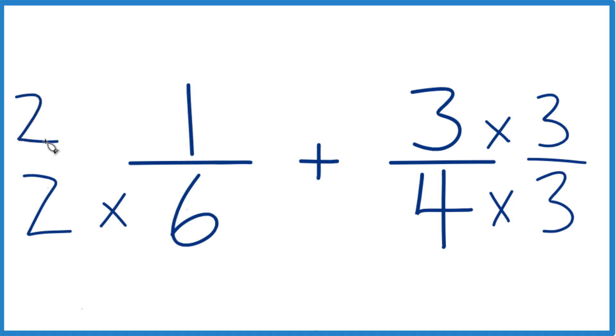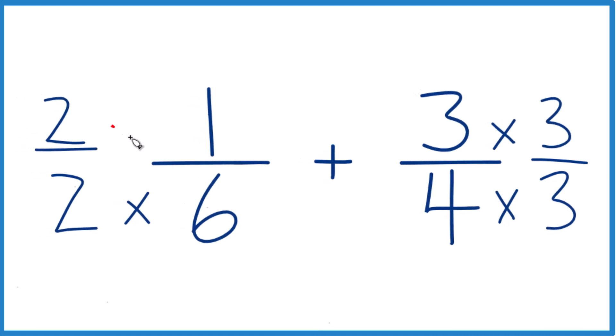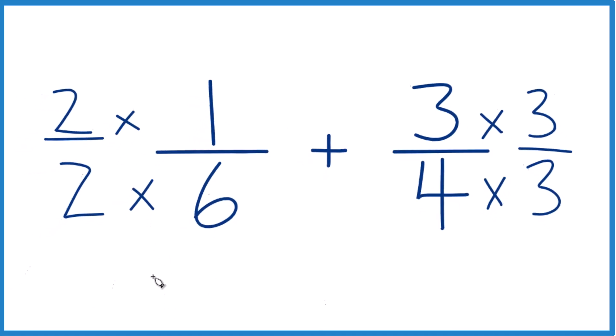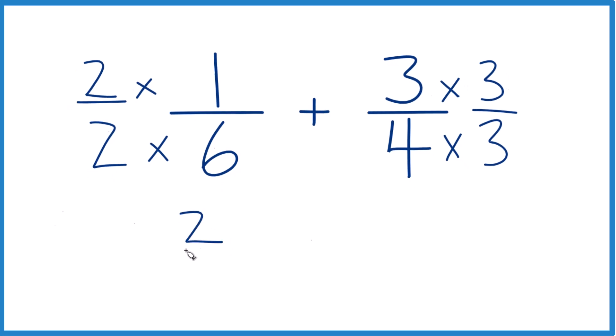Over here, 2 times 1 is 2, and 2 times 6 is 12. So 2 twelfths — that's the same as 1 sixth. They're equivalent.